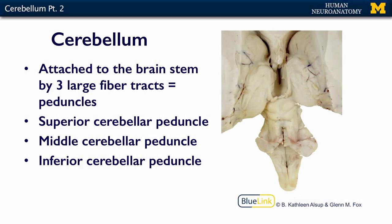In this particular section, we can see the entire brain stem, beginning with the medulla, the pons, and the midbrain. We can see where our peduncles are — here is the area of the superior, the middle, which is the largest, and the inferior.